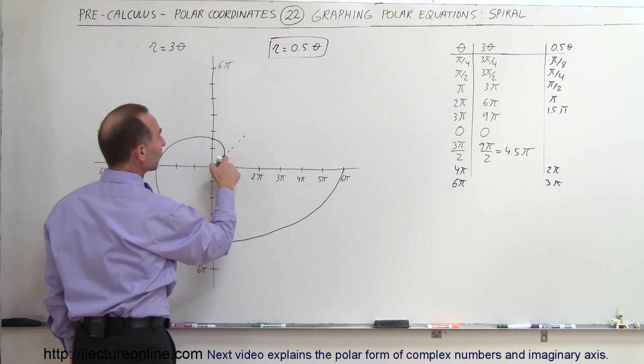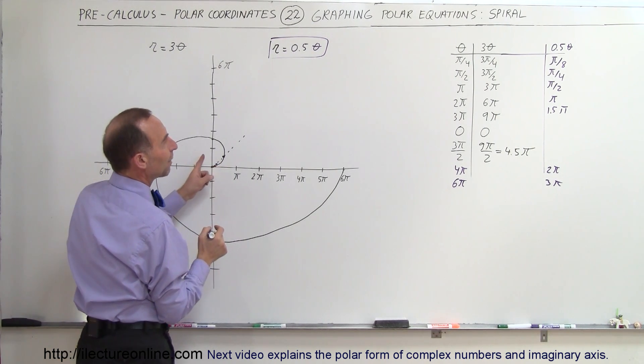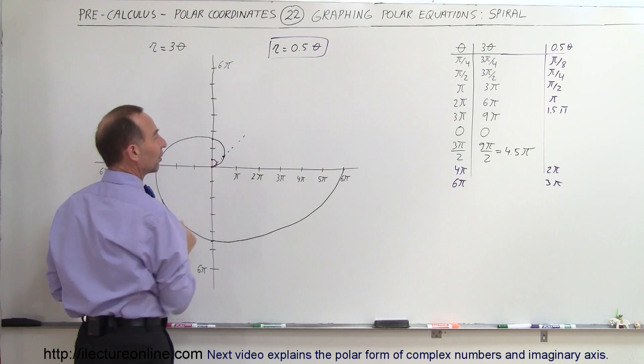So when we have π over 4, the length is π over 8, so that would be a very small length like that, π over 8. When we have π over 2, then at that point we have π over 4. So you can see that the spiral starts out very slowly.